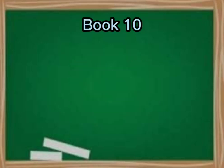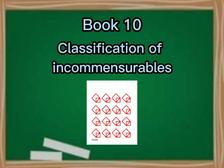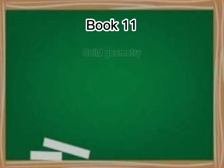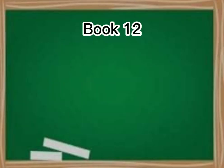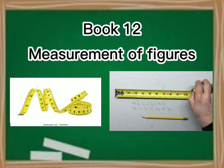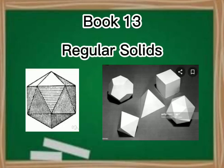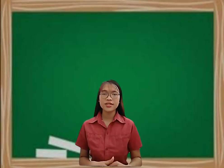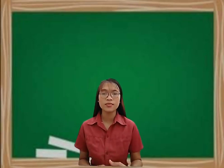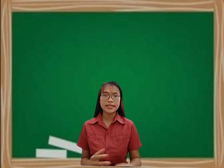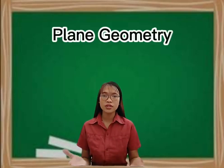Book 10, classification of incommensurables. Book 11, solid geometry. Book 12, measurement of figures. And last, book 13, regular solids. Those mentioned elements include the following volumes. Volumes 1 to 6 is all about plane geometry.